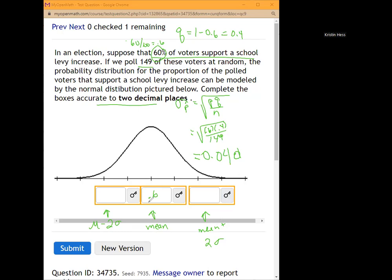So for our mean, we take 0.6 and we're going to add two standard deviations. So we'll take 0.04 and double it. So that's 0.08. And so that means this is going to be 0.68.